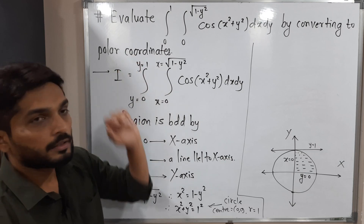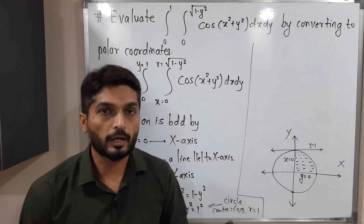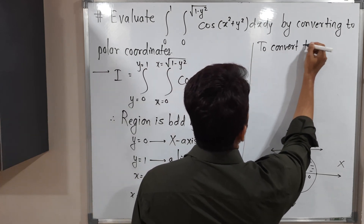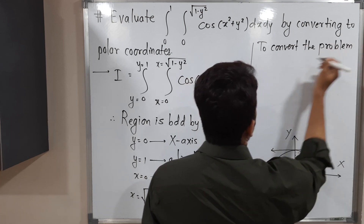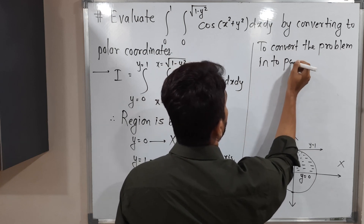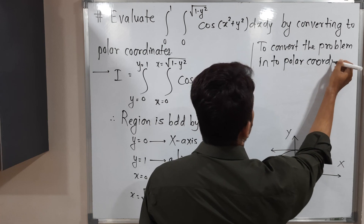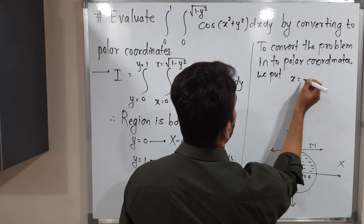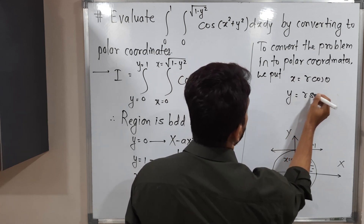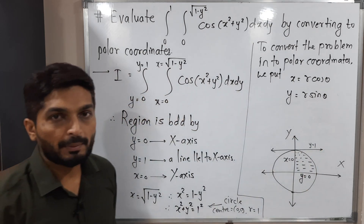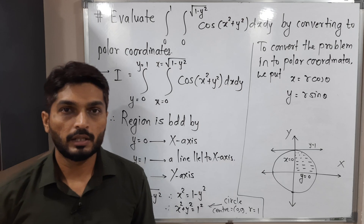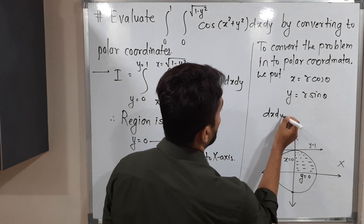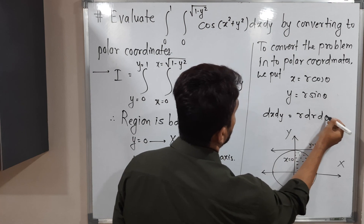Now we convert the problem into polar coordinates using the standard substitution: X = R cosθ, Y = R sinθ. Because of this substitution, dx dy becomes R dr dθ.